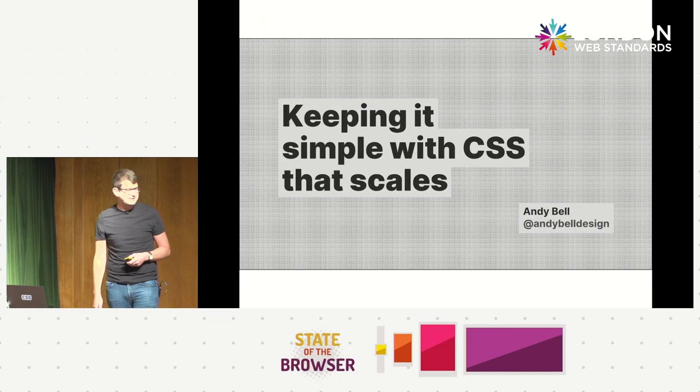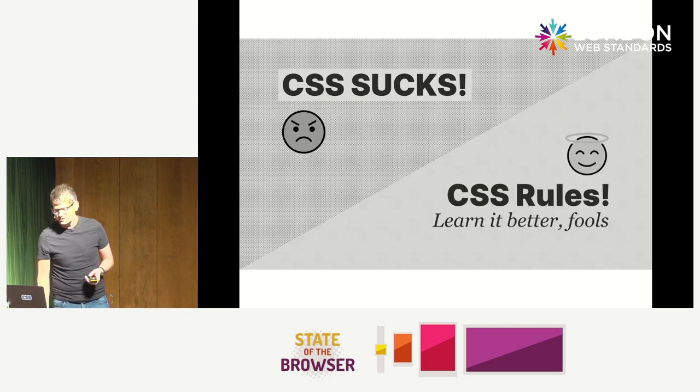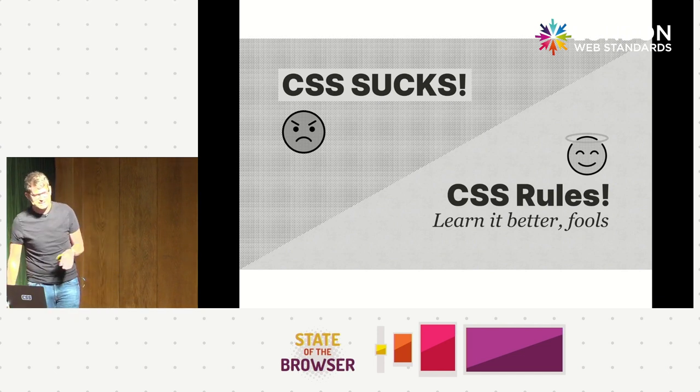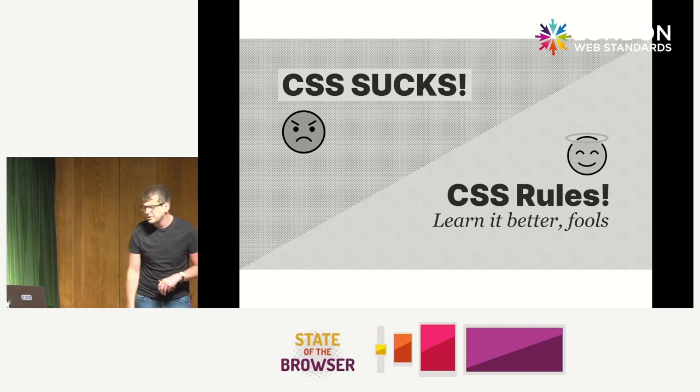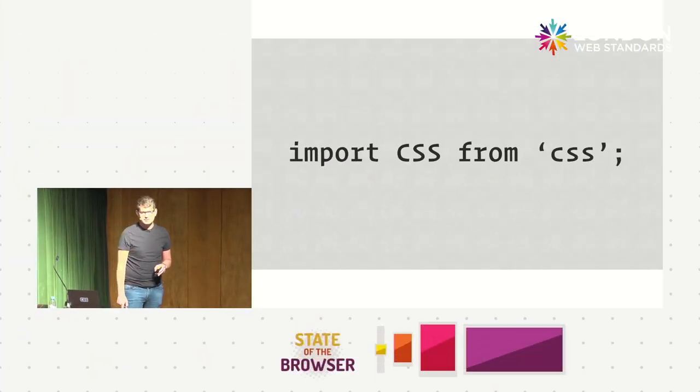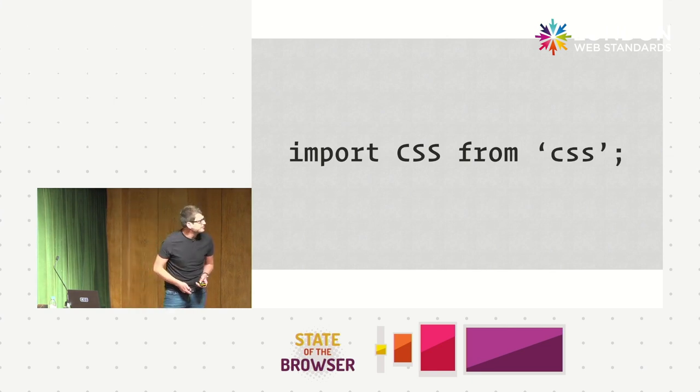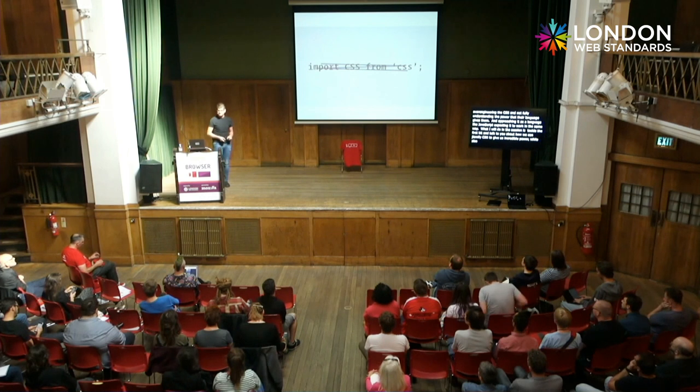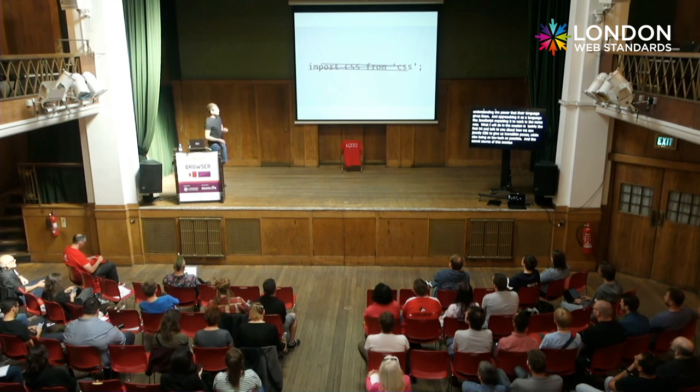Keeping it simple with CSS at scale. So CSS has a weird place on the web today — we've got some polarisation going on. We've got a camp that is "CSS sucks" and then we've got "CSS rules," the camp that I like to live in. I have a theory why the CSS sucks camp have the attitude that they do: it's a combination of them over-engineering the CSS, not fully understanding the power that the language gives them, and approaching it like it's JavaScript.